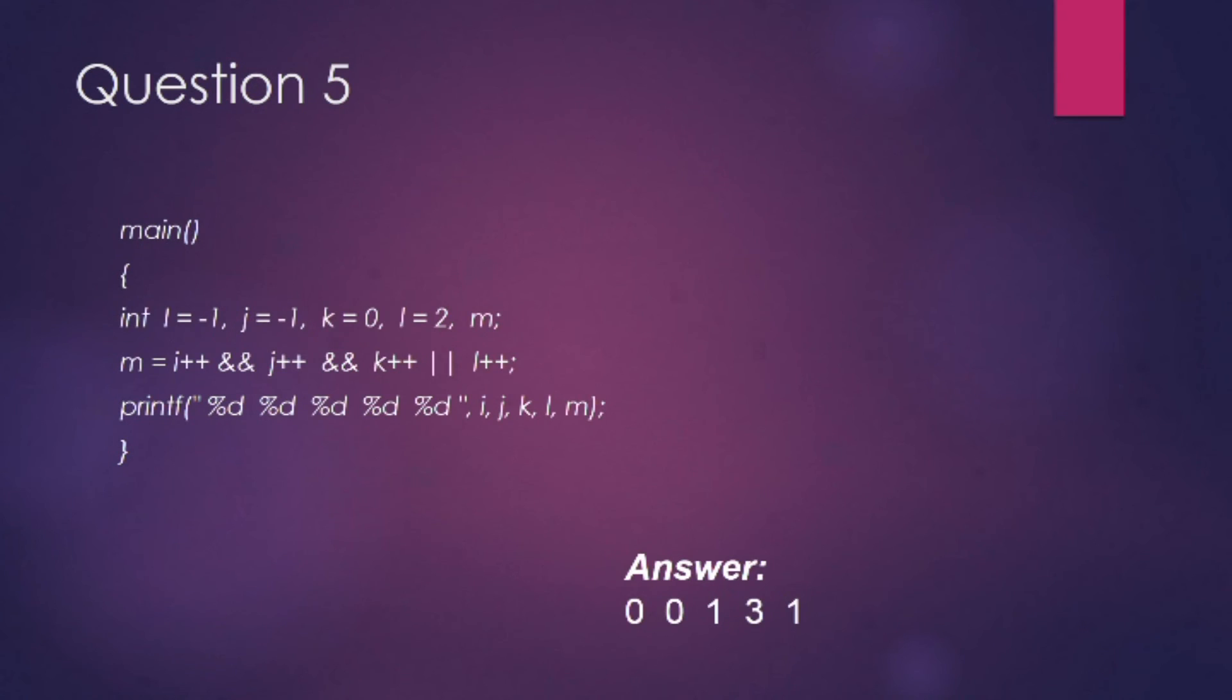Let's look at the fifth question now. Here you can see that one expression is assigned to the variable m. What is important here is to identify the results of this expression. Logical operations always give a result of 1 or 0.